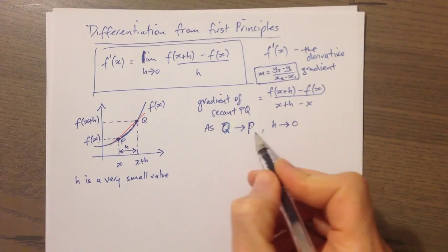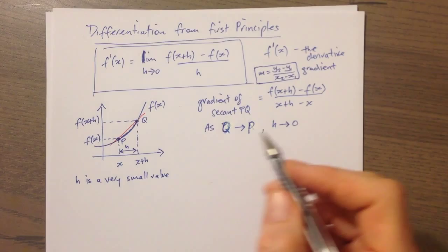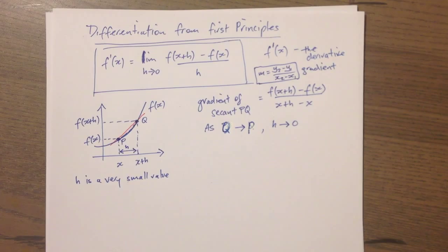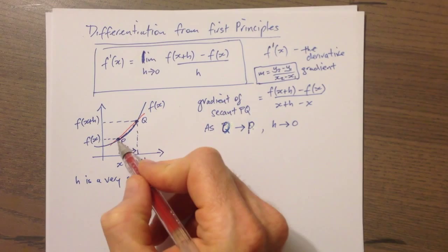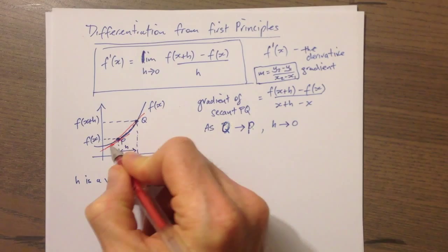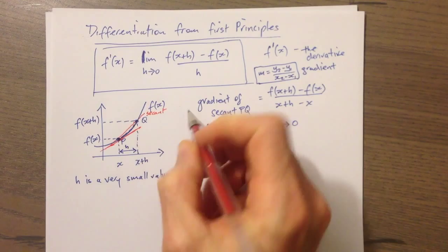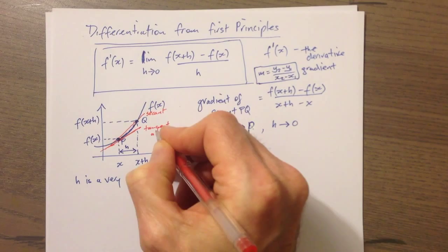As Q approaches P, h approaches zero. We can think about Q becoming P — we get to this limiting value where that actually happens. So now let's think about the tangent. Remember, this line from P to Q is a secant — a line that cuts at two points. Now we also have a tangent at P.